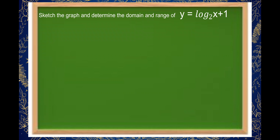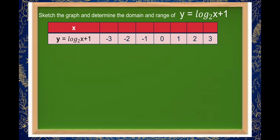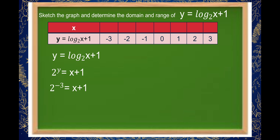Next, we are going to make a table of values and sketch the graph, and determine the domain and range of y is equal to log of x plus 1 to the base of 2. The table of values goes from y equals negative 3 to positive 3. We find the value of x by converting the logarithm to exponential form: 2 raised to y is equal to x plus 1. Substituting y equal to negative 3, we get 2 raised to negative 3 is equal to x plus 1, which means 1 over 8 is equal to x plus 1.